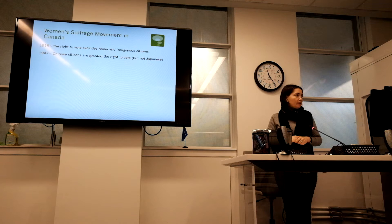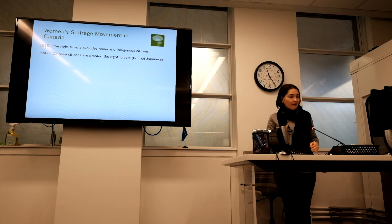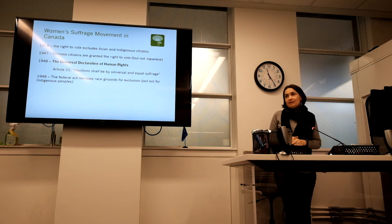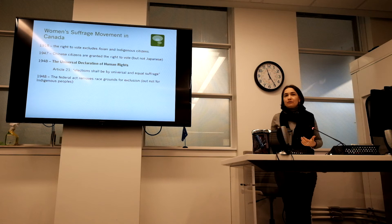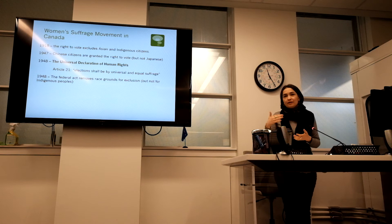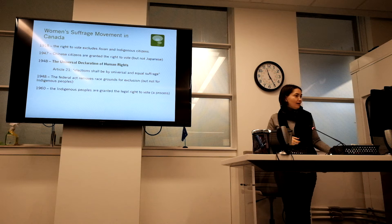In 1947, Chinese citizens were granted the right to vote, but not Japanese — and that has to do with the Second World War. In 1948, the Universal Declaration of Human Rights was adopted by the UN. Article 21 states that elections shall be by universal and equal suffrage, meaning all citizens must have the right to vote. Because Canada voted for the declaration, it had to pass a law complying with it. So in 1948, the Federal Act removed the race-based exclusion — but again, not for Indigenous people. In 1960, finally, everyone received the right to vote.